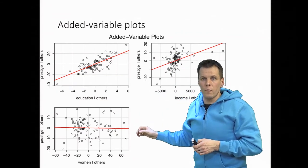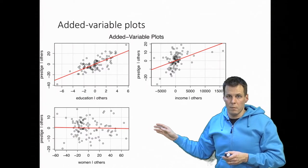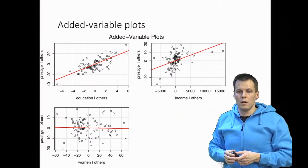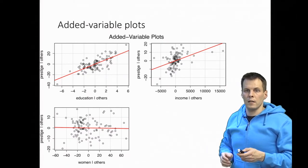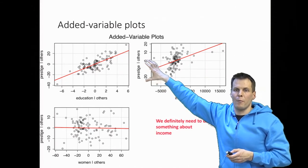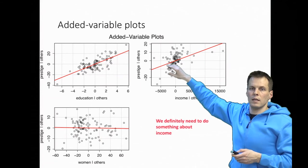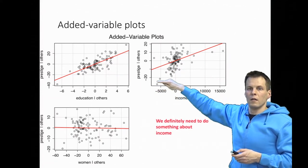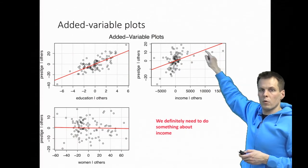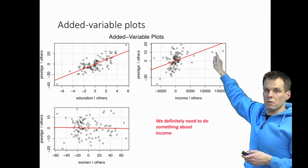This plot allows us to look for non-linearities and heteroscedasticity in a more refined manner. What we can identify here is that the effect of income looks pretty unusual. We want observations banded around the regression line, but here it looks more like a slight curve that goes up and then flattens out, and we also have much more dispersion on one side than the other.